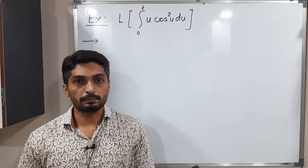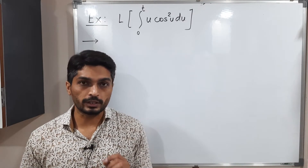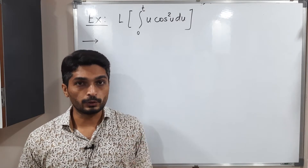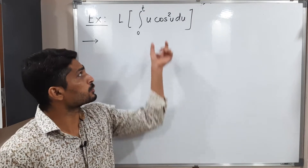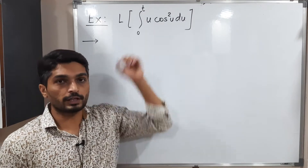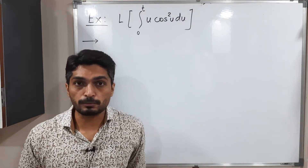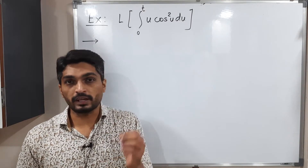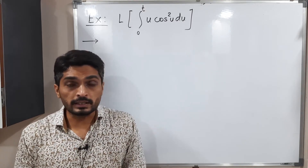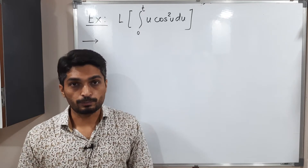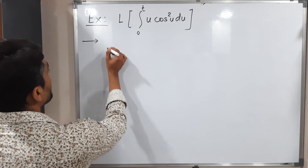Let us discuss this example. We have to find the Laplace of the integral from 0 to t of u·cos²(u) du. What we do: first we find the Laplace of cos²(u), after that we consider the multiplication by u, and at the end we consider the integration as well. So let us start to solve this problem one by one.